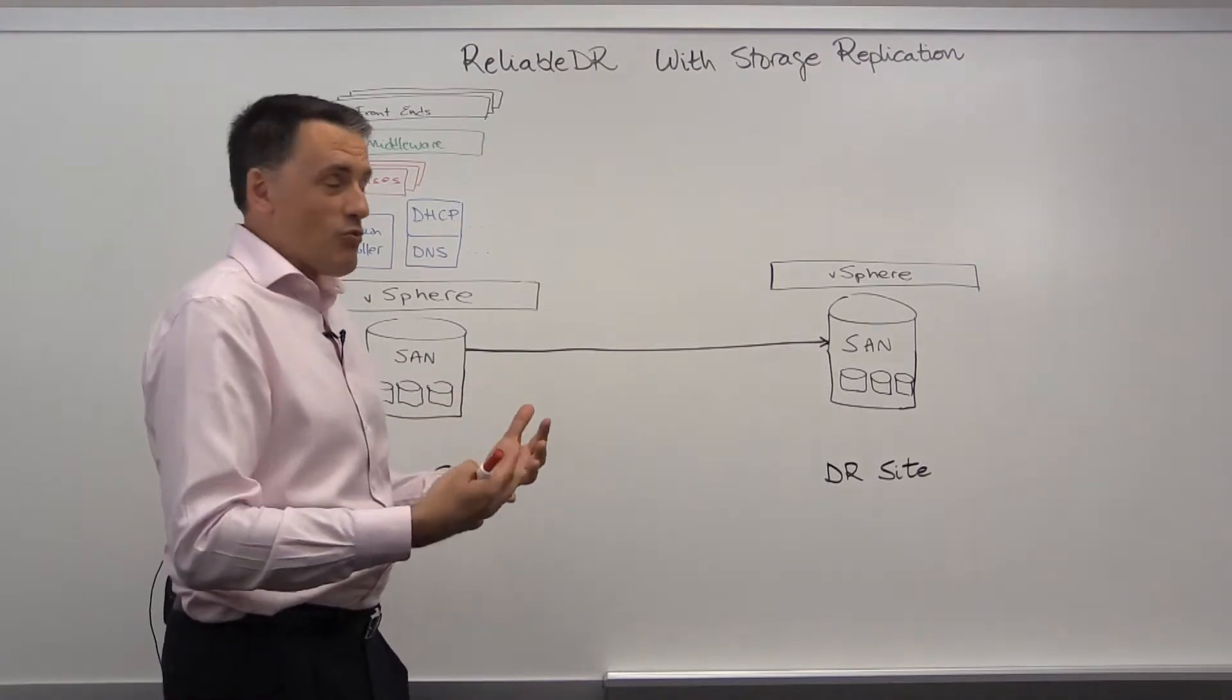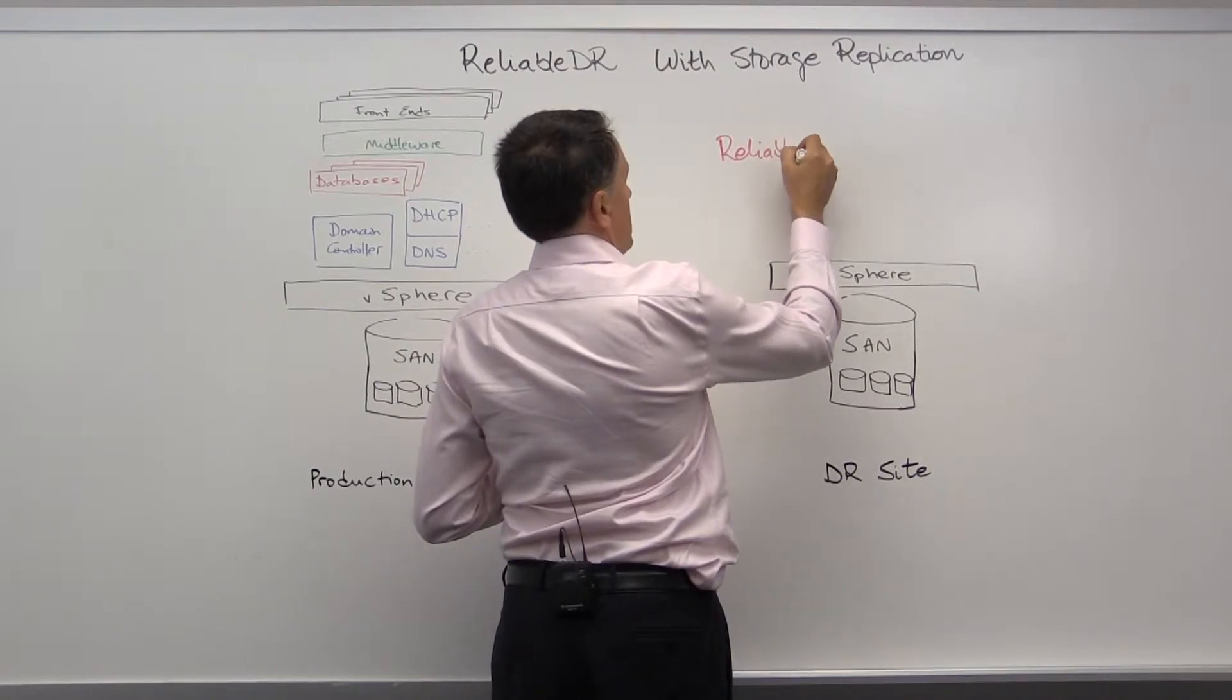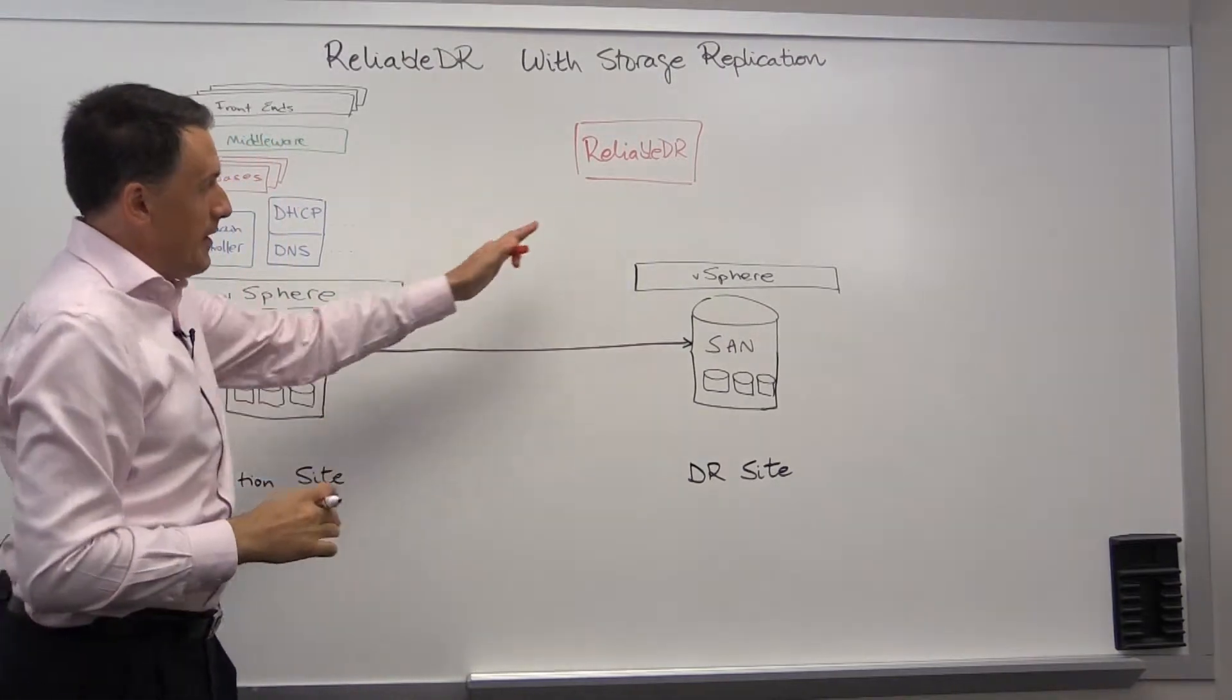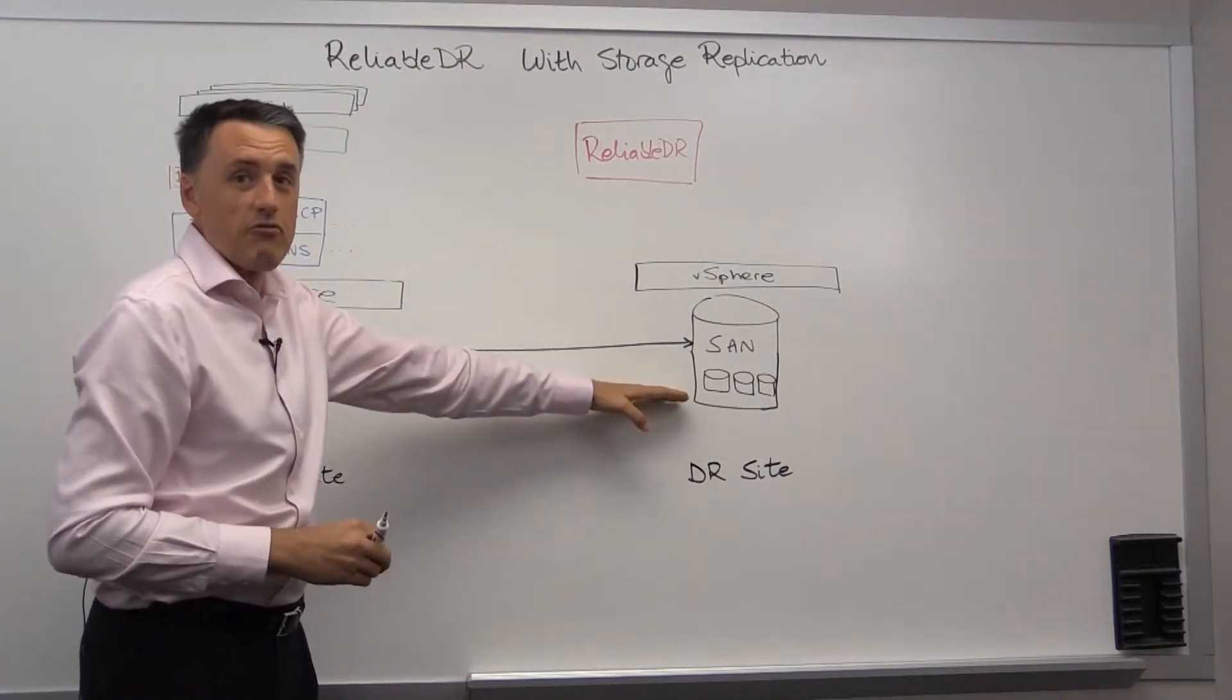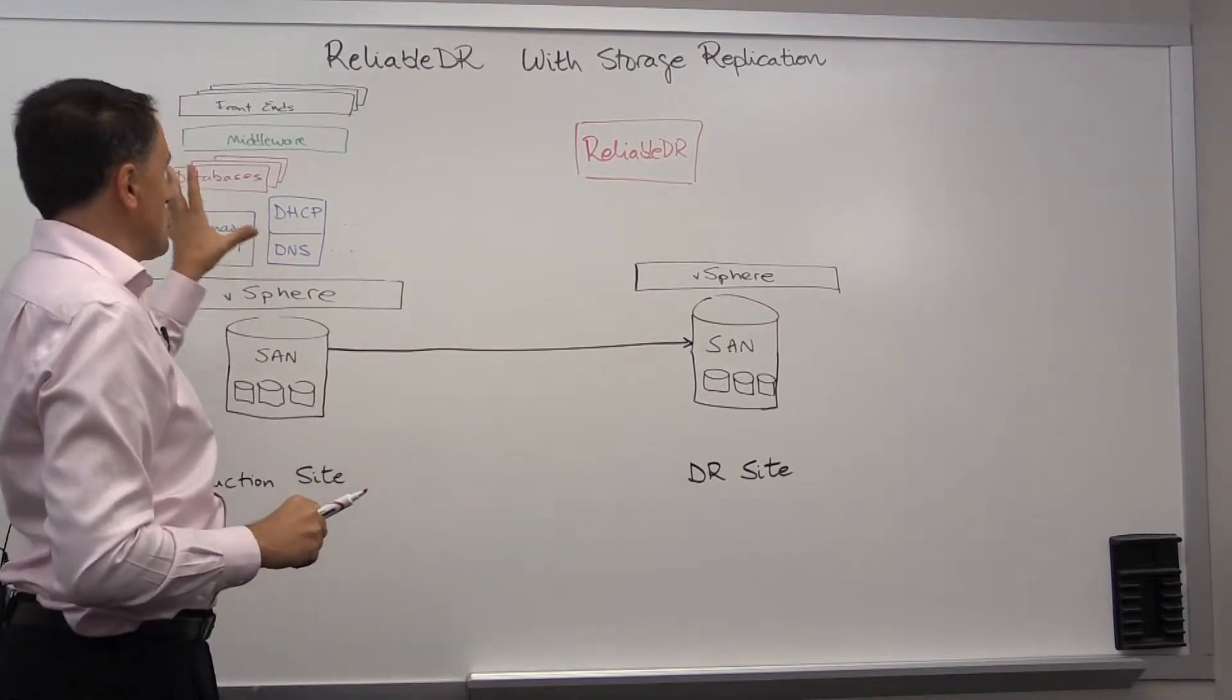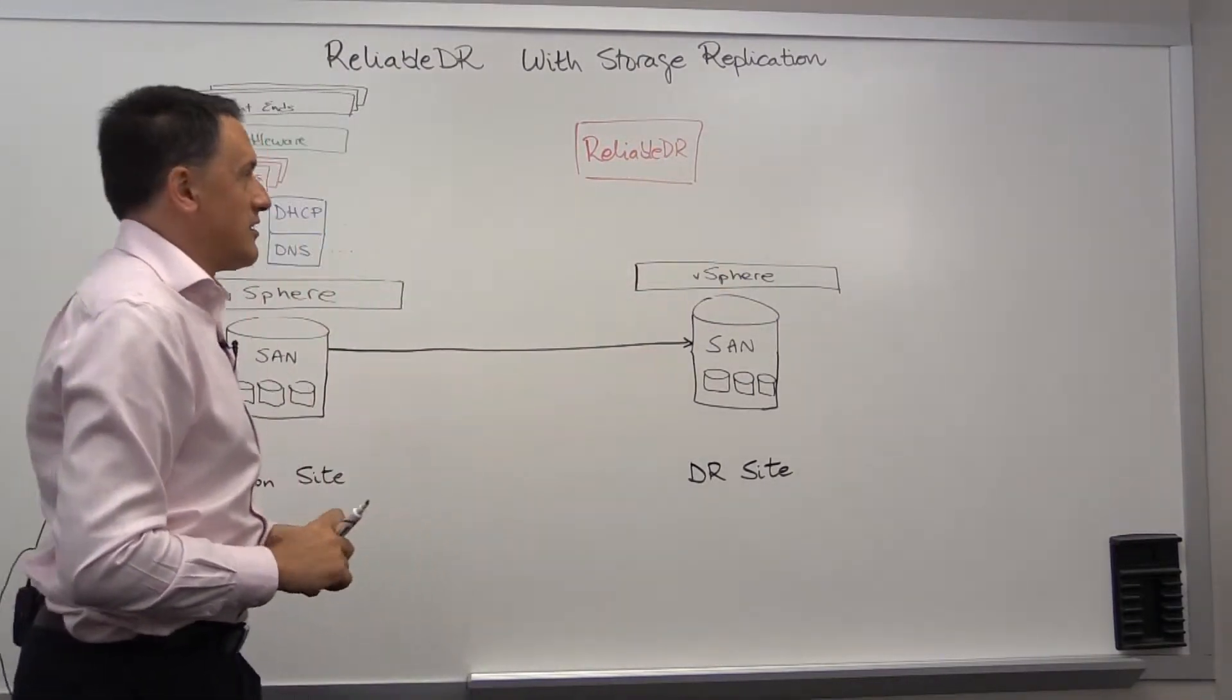Reliable DR runs as a VM in the DR site. It does not require anything to be running in production. What Reliable DR is going to do is verify that the replication is running correctly, and that we can create points in time that will allow us to bring all of these applications back in production in the DR site.